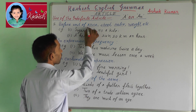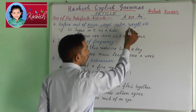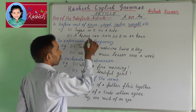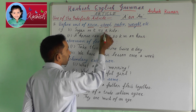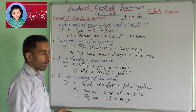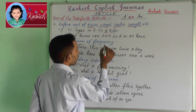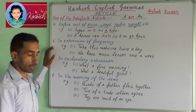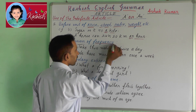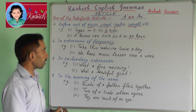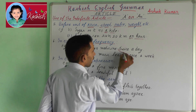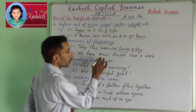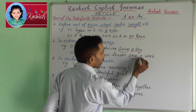Fifth, before a unit of price, speed, ratio, weight, etc. For example: sugar is rupees 40 a kilo; a horse can run 50 kilometers an hour. Sixth, in expressions of frequency. For example: take this medicine twice a day; we have a music lesson once a week.